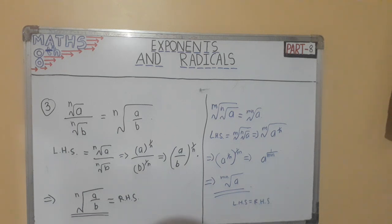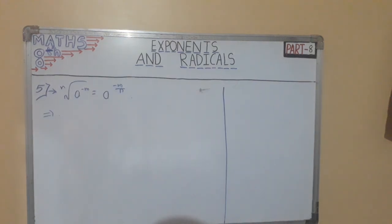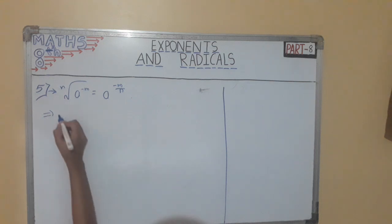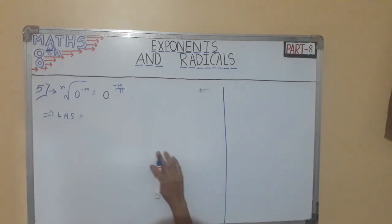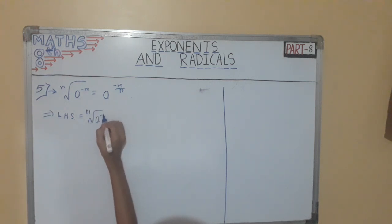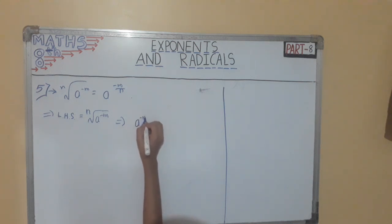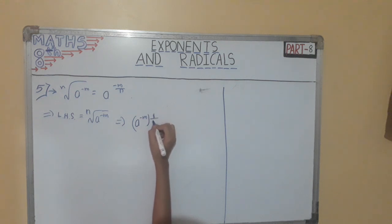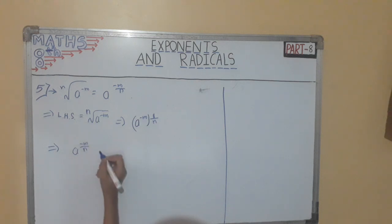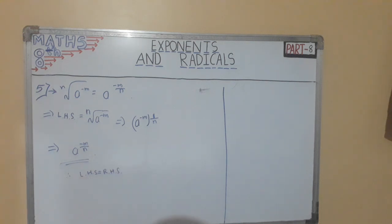I hope you have understood this question. Now the fifth example: n root of a raised to minus m is equal to a raised to minus m upon n. First we will take LHS, which is n root of a raised to minus m. We can write root n as a raised to minus m whole raised to 1 by n. By multiplication of powers, we get a raised to minus m upon n. Therefore LHS is equal to RHS. I hope you have understood all these questions.